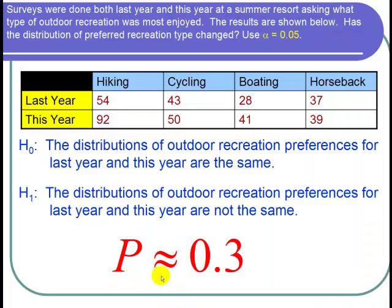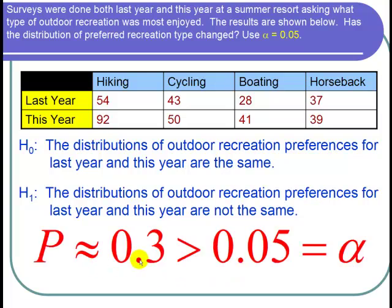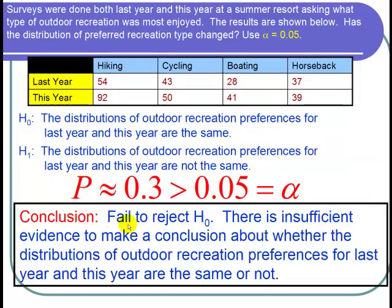So the p-value was about 0.3 and what's important about that is that 0.3 is greater than the level of significance of 0.05. And since p is greater than alpha I fail to reject the null hypothesis and I can conclude that there is insufficient evidence to make a conclusion about whether the distributions of outdoor recreation preferences for last year and this year are the same or not.